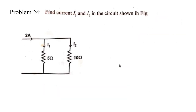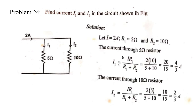Next, find I1 and I2 from this circuit. This is the current divider rule. For the current divider rule, I equals 2 ampere, R1 and R2 are given. According to the current divider rule, I1 is equal to I times R2 divided by R1 plus R2. This is the formula.